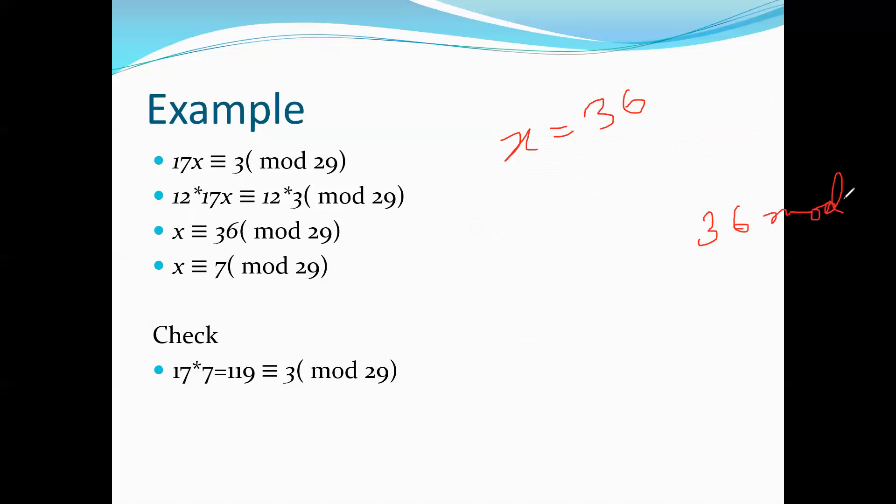Mod 29, okay. We can write this as x is congruent to 7 mod 29. That's the result.